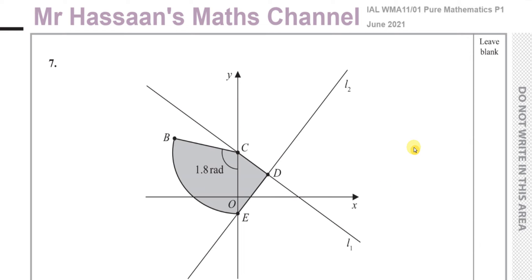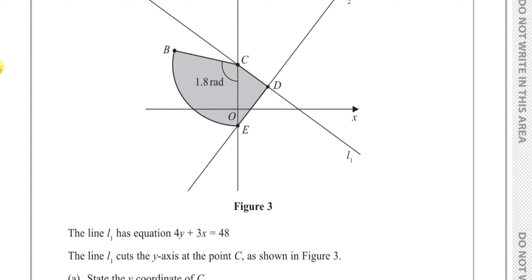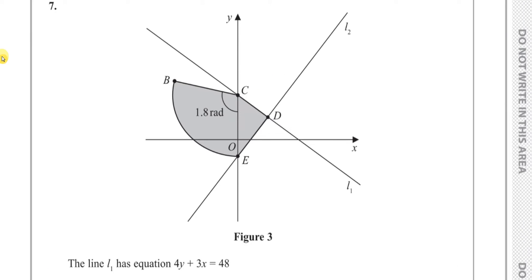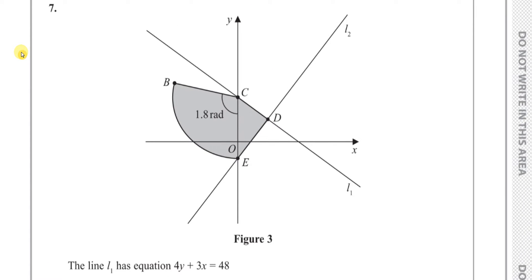Welcome back. This is Mr. Hassan's Math Channel, and I'm now answering question number seven from the International A-Level Edexcel Pure Mathematics P1 June 2021 exam. This question is about straight line graphs and something about radian measure and area.